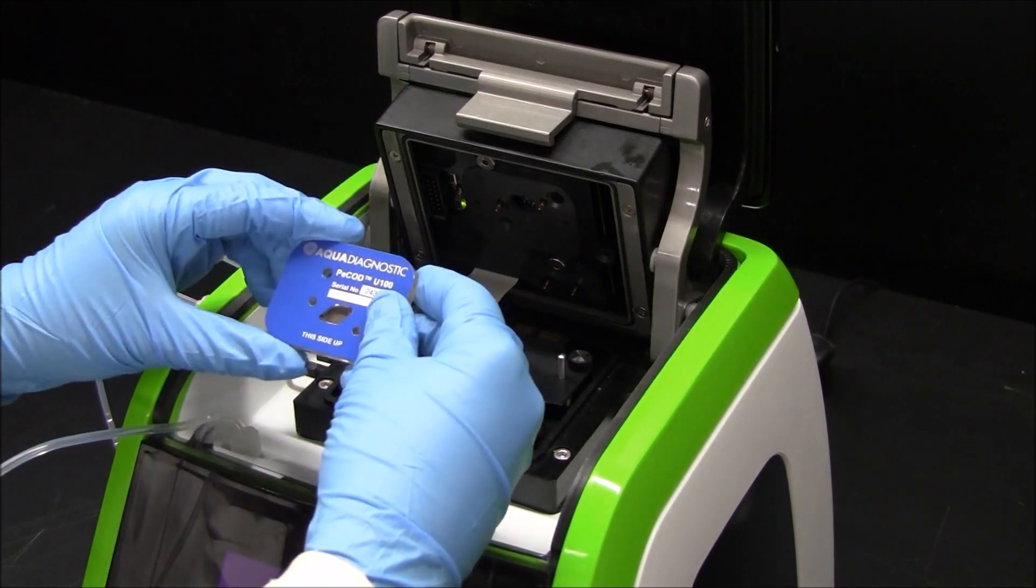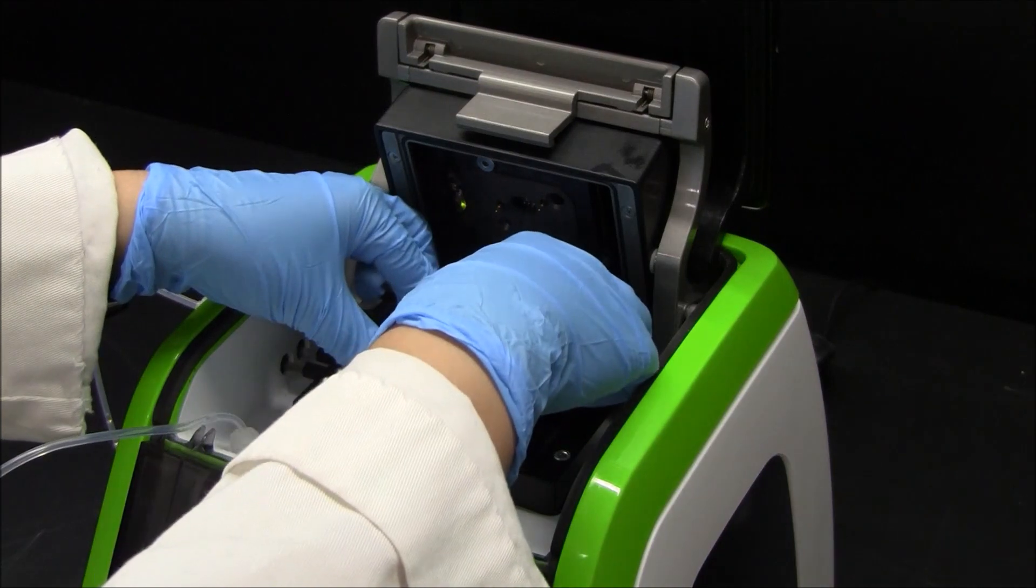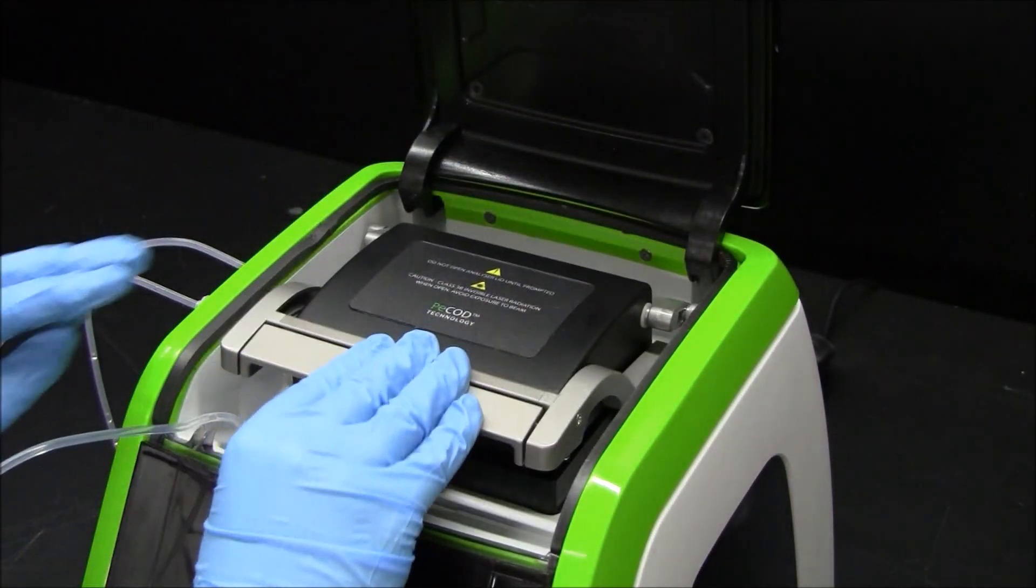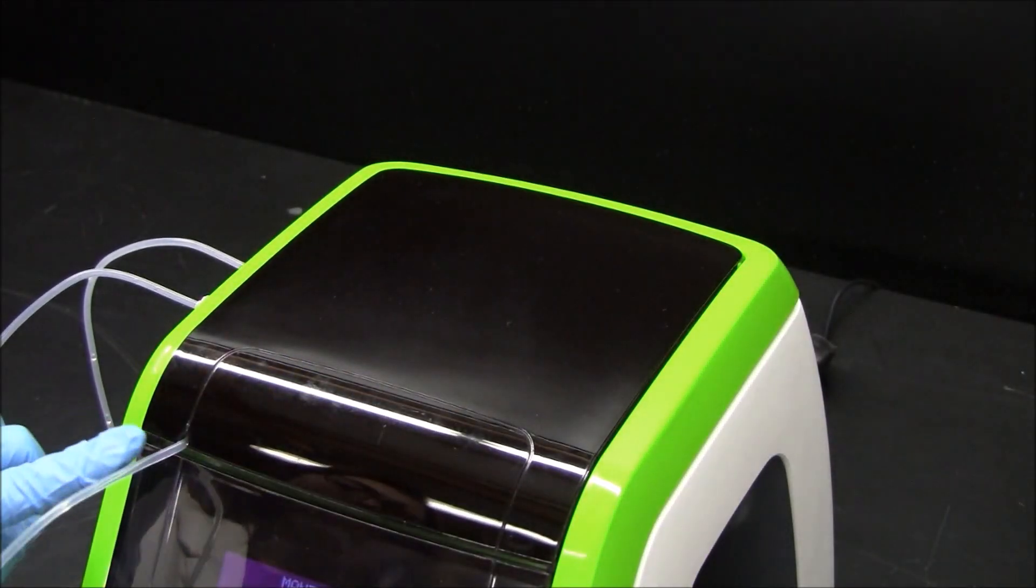Check that the blue sensor is the correct side up. Match the holes in the sensor to the pins of the electrode block. Close the analyzer head with some pressure. Place the port A tubing through the guide to prevent pinching.